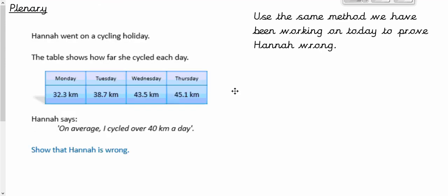So the plenary, Hannah went on a cycling holiday. The table shows how far she cycled each day. So 32.3 kilometres, 38.7, 43.5, 45.1. She's saying, on average, I cycled over 40 kilometres a day. Show that she's wrong. So we've got to prove her wrong, use exactly the same method we've been using. So you're going to add them all up and divide through by the total number of bits of data. Okay. So you're going to pause it, have a go at it, and then unpause and we will crack on with that. So give it a pause now.